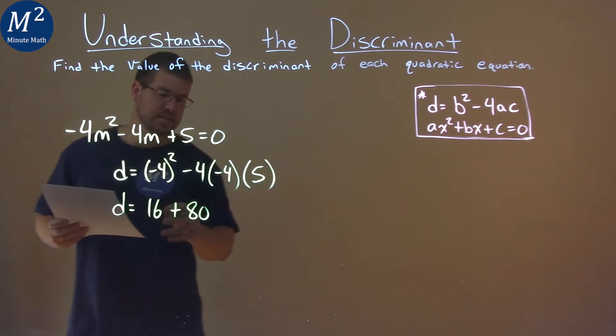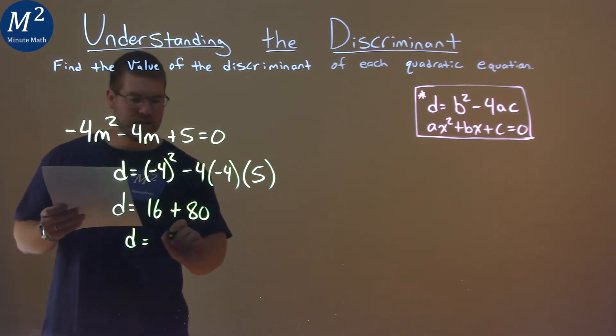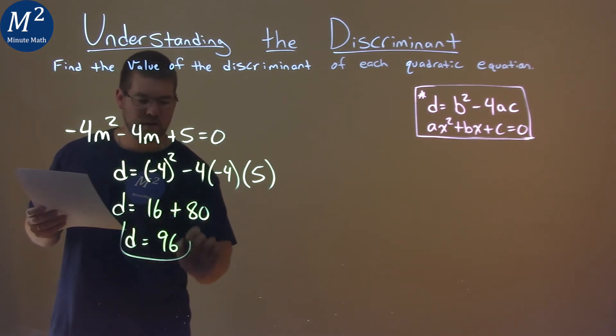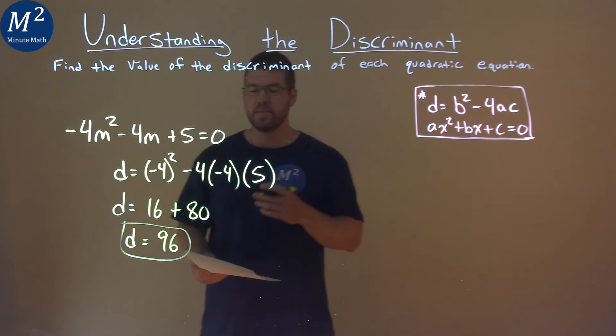So now we have 16 plus 80. 16 plus 80 is 96, and so our discriminant here is 96.